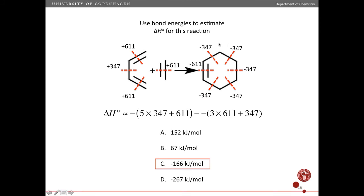Okay, so if I look at my product, I form five CC single bonds and one CC double bond, right? So there are negative signs in front of all of these. And in order to do this, I have to break three CC double bonds and one CC single bond in my reactants.